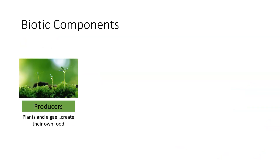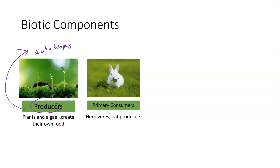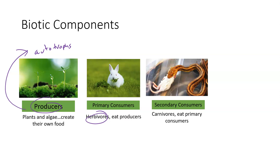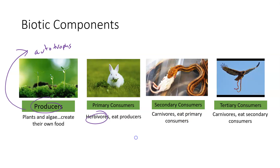Looking at biotic components — in future lessons we'll refer to producers often. Producers, also known as autotrophs — those are synonyms — refer to things like plants and algae. They don't have to eat other organisms to survive; they create their own food, usually using sunlight. Then we have primary consumers, which are herbivores — they eat producers, meaning plants and algae. Secondary consumers are carnivores, meaning they eat primary consumers. Tertiary consumers eat secondary consumers, and theoretically we could go up to quaternary consumers in some ecosystems.